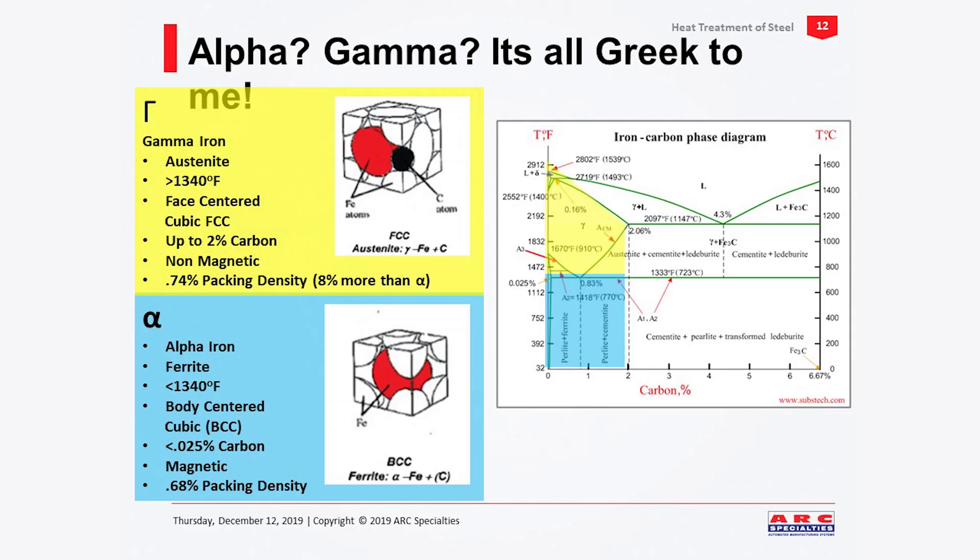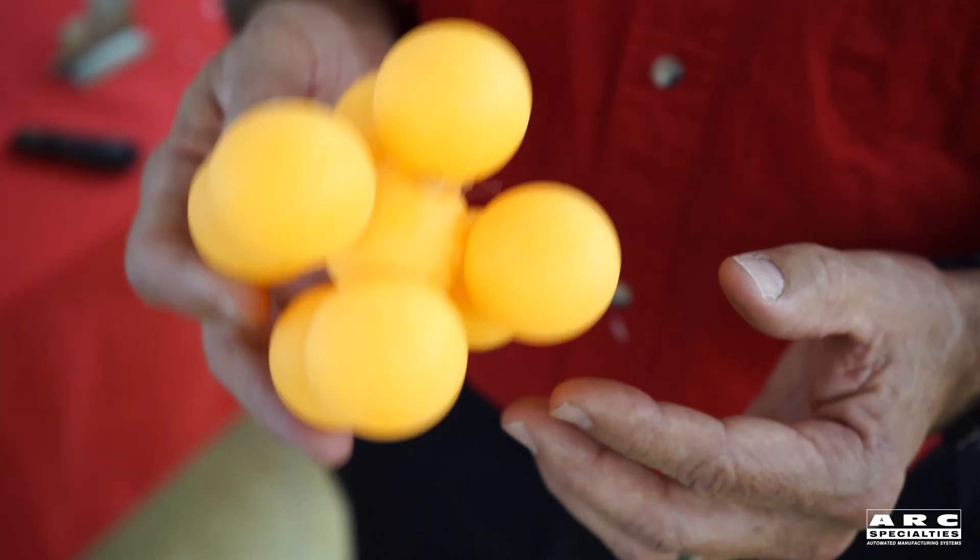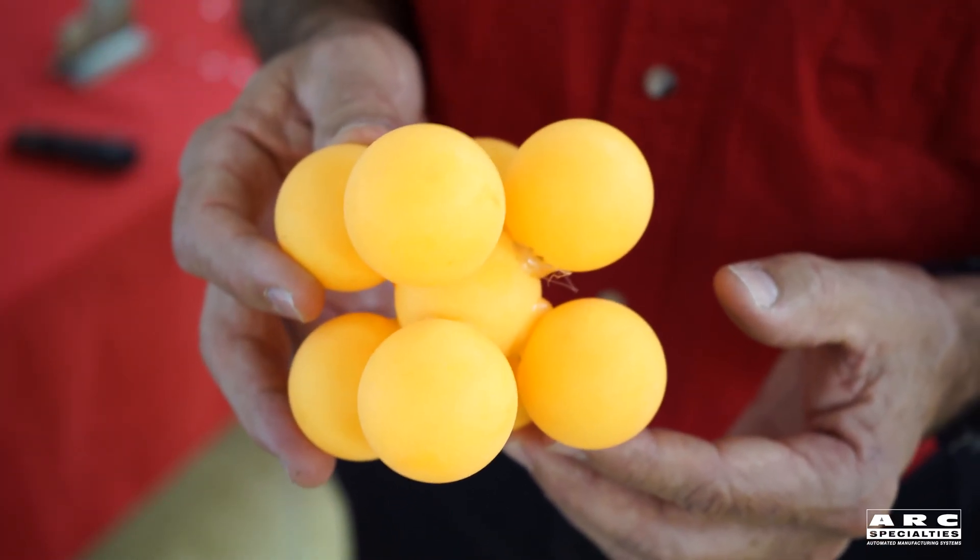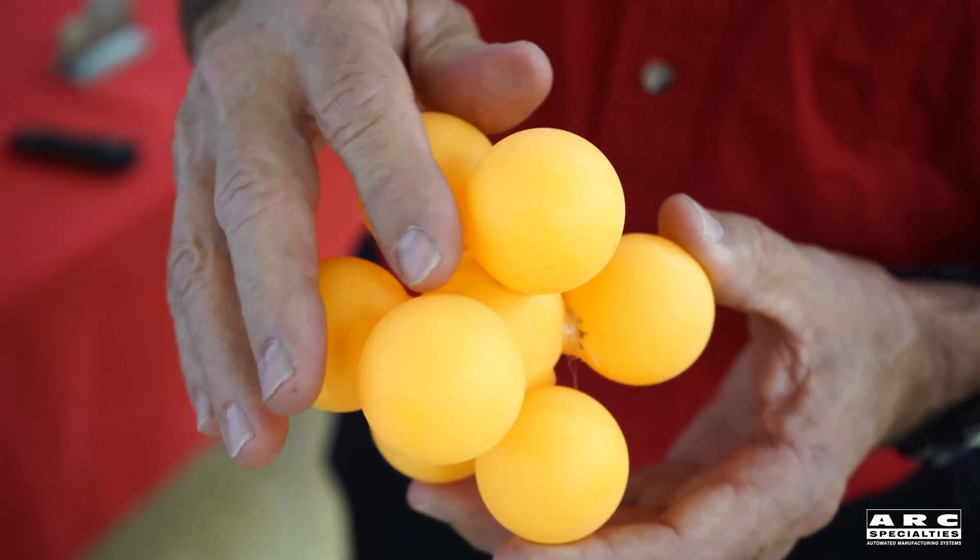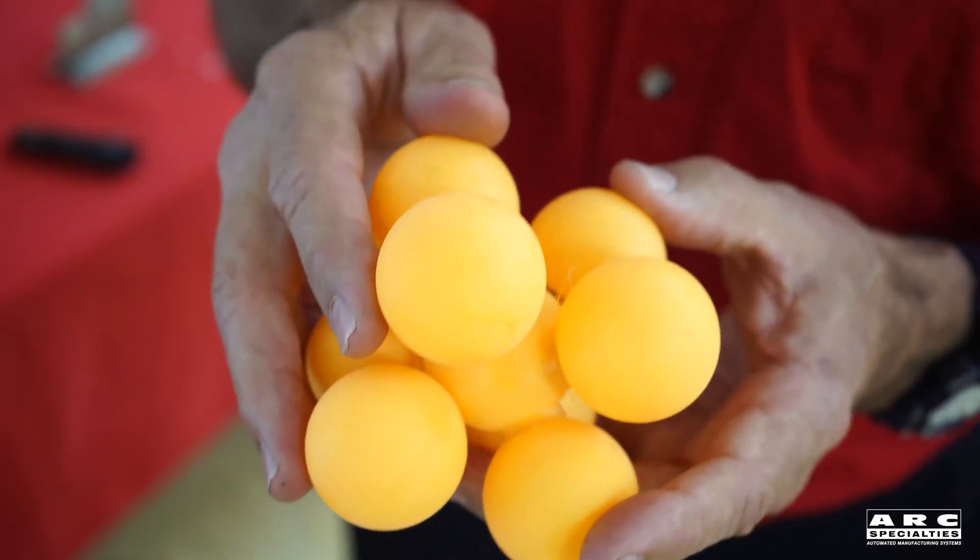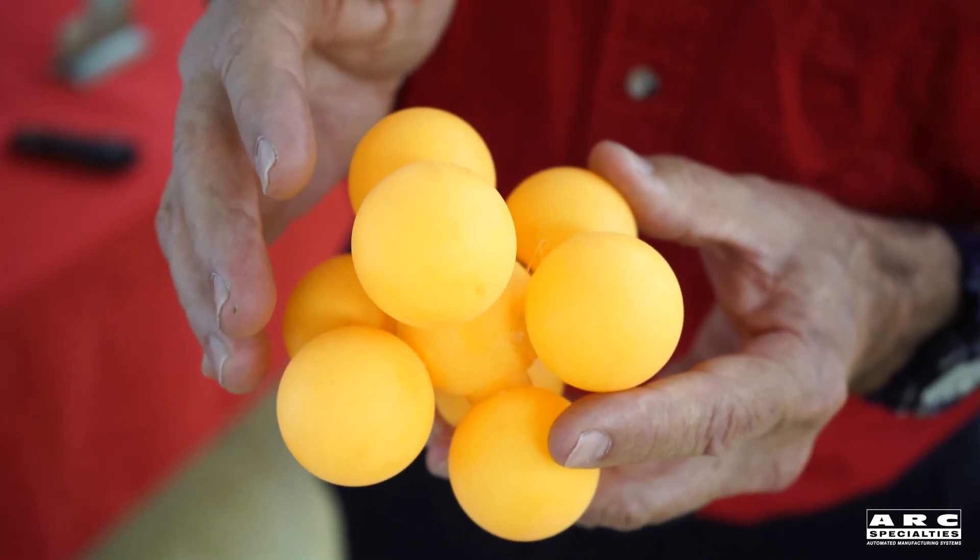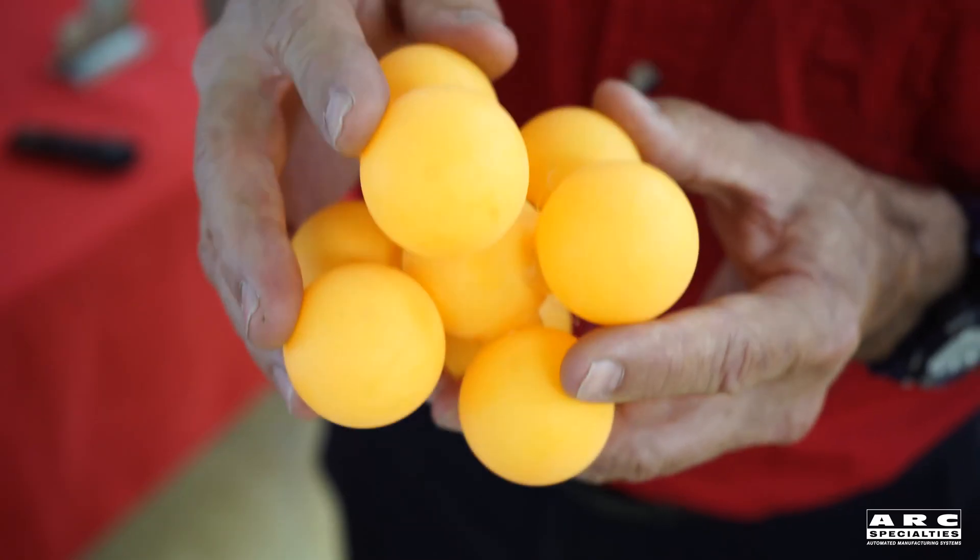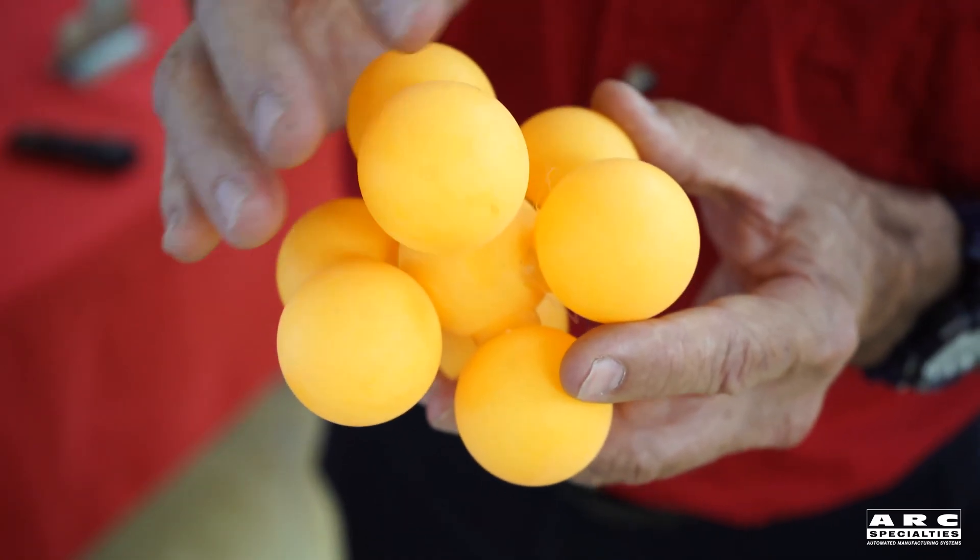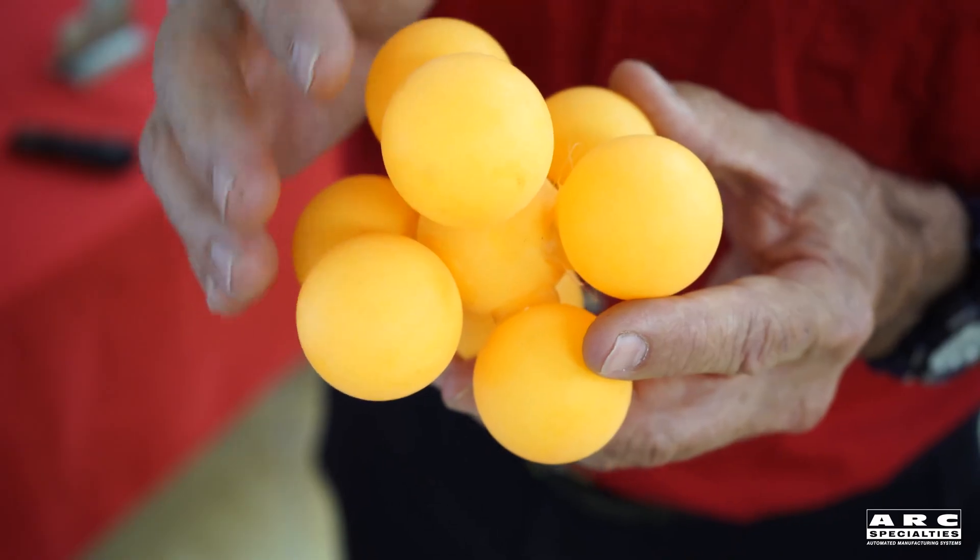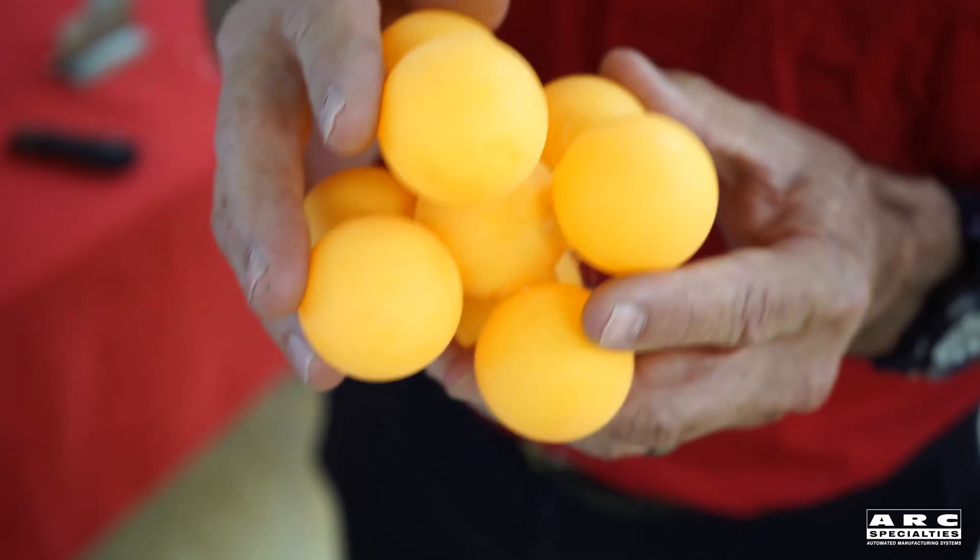In the blue zone, that's iron with less than two percent carbon. Iron plus carbon is steel. And that exists as alpha iron, also called ferrite. This is iron below 1,340 degrees Fahrenheit. It's body-centered cubic, so we have four atoms on top, four on bottom, one in the center. It has a very low carbon solubility, less than 0.025 percent. It's magnetic, and it has a relatively low packing density. That means there's a lot of area that's not atoms. It's 0.68 packing density, and that's an important feature.